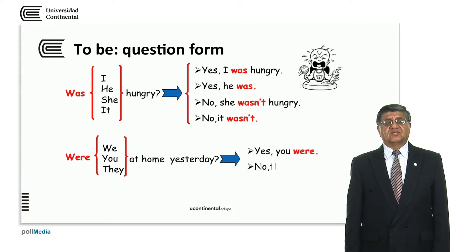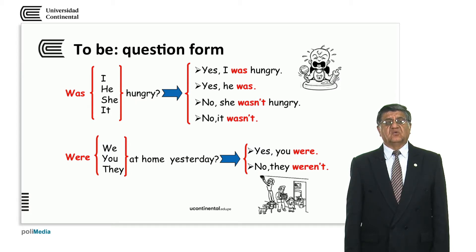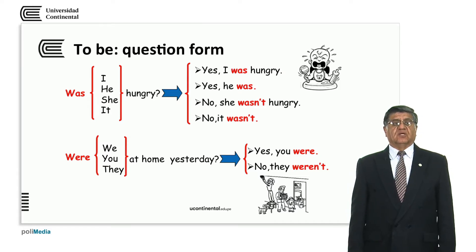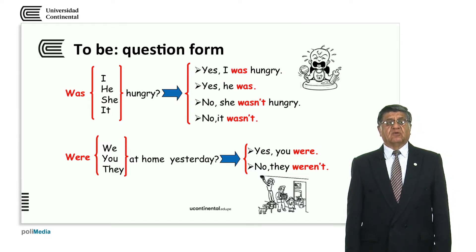Were you at home yesterday? Yes, we were. Yes, you were. We have the plural persons — we, you, and they — with the complement. Were you at home yesterday? Yes, you were. No, they weren't. Were they at home yesterday? Remember the verb to be, the subject, and the complement, with the corresponding answer — full answer or short answer.